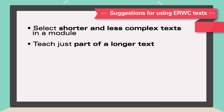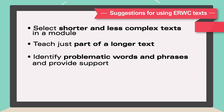You'll probably want to teach just part of a longer text. For example, Chris Jones' article about Roger Ebert in the Value of Life module has two versions — a longer one and one that's been modified that will be more appropriate for English learners. You'll want to identify problematic words and phrases and provide support for your students, perhaps by putting glosses in the margin of the text so they don't have to constantly be looking words up in a dictionary.